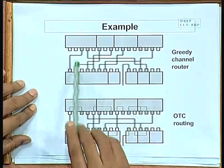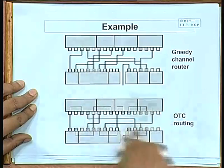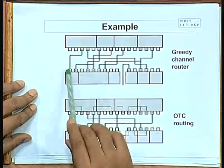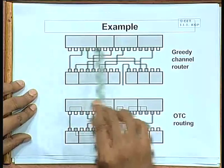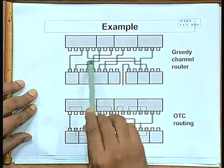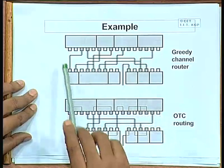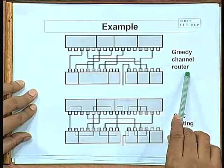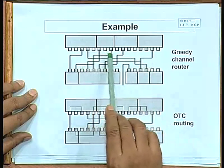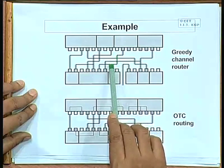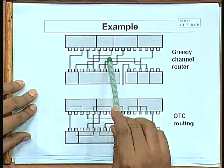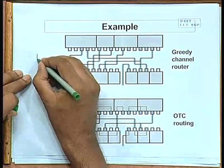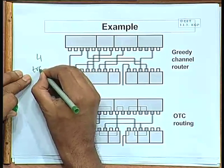I have shown one channel in a standard cell based design — two cell rows with a channel in between. I have not numbered the terminals, but you can understand the connections by seeing the tracks. This is a solution obtained using a greedy channel router, which requires 4 tracks: 1, 2, 3, and 4. So here you need 4 tracks.